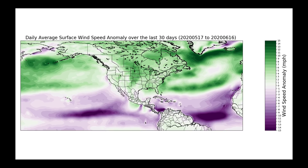Normally I try to get these videos out midday, but today I'm a little late because I spent the morning working on some new code to show you this map and I also really wanted to wait on the 12Z model runs. What we have here is a map showing over the last month the daily average surface wind speed anomaly. Much of the United States has been very windy not only over the last month but before that as well. In the central plains of the U.S. up into the Canadian prairies, we've averaged between 6 and 10 miles an hour greater than normal daily average wind speed.